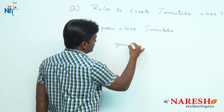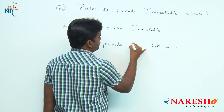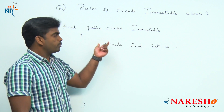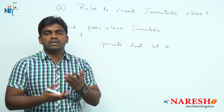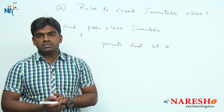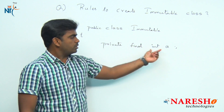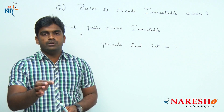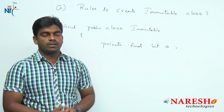The second rule: all the properties should be declared as private and final. Private means the properties of the object are not directly visible from outside — just like a person is visible but their personal details are not. Final means once you assign the value, it cannot be modified.